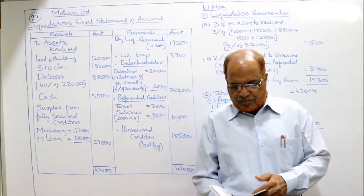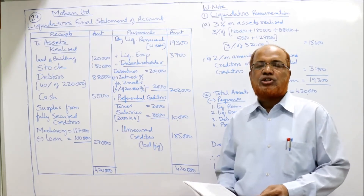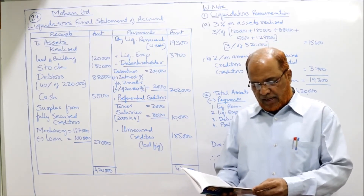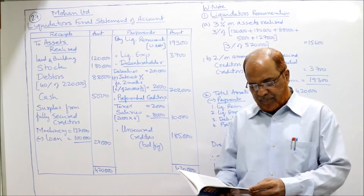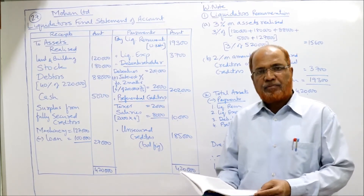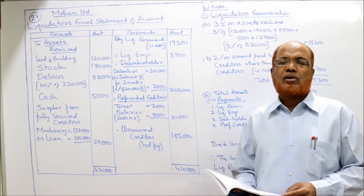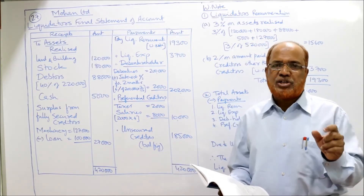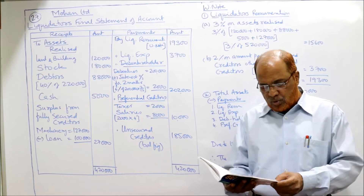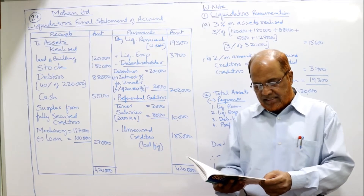Now see the 27th problem. Mohan Limited went into voluntary liquidation on 31st October 2010. Remember the date: 31st October the company went into liquidation. The balance sheet shows: 4,000 equity shares of Rs.100 each — Rs.4 lakh; 6% debentures — Rs.2 lakh; secured loan of Rs.1 lakh secured by machinery (machinery was pledged); and sundry creditors of Rs.3 lakh (assumed unsecured). Assets include land and building, machinery, closing stock, debtors, cash in hand, and profit and loss account — which is an accumulated loss, a fictitious asset to be ignored.